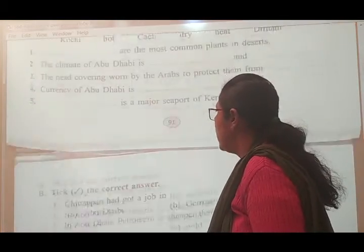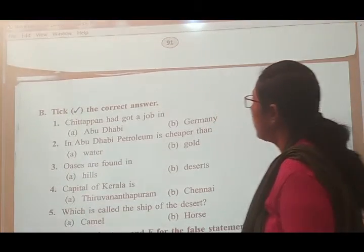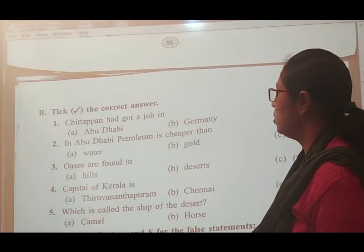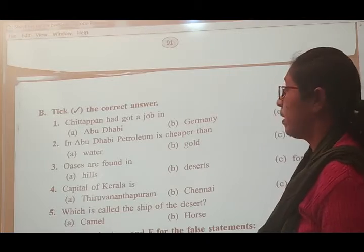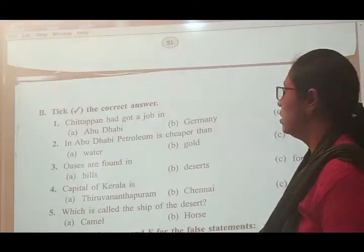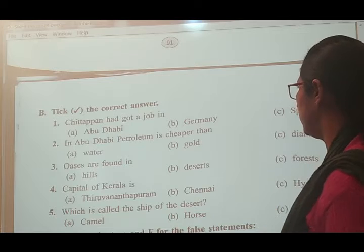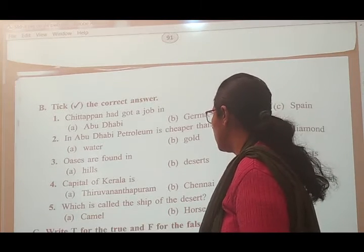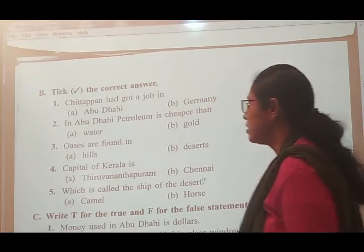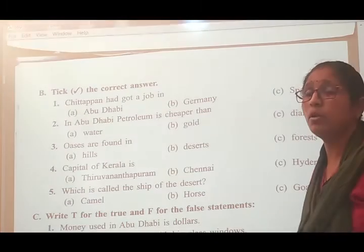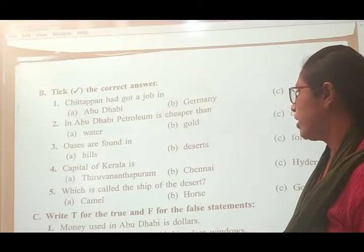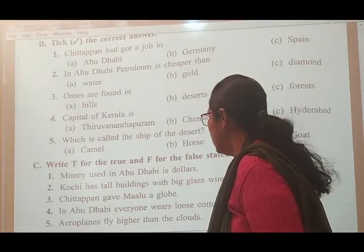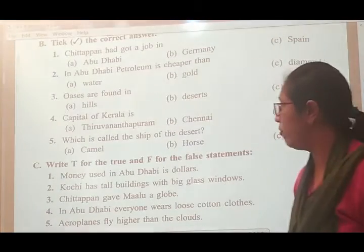Next, pick the correct answer. Chintapan had got a job in Abu Dhabi. In Abu Dhabi, petroleum is cheaper than water. Horses are found in deserts — capital of Kerala is Thiruvananthapuram. Which is called the ship of the desert? That is the camel.